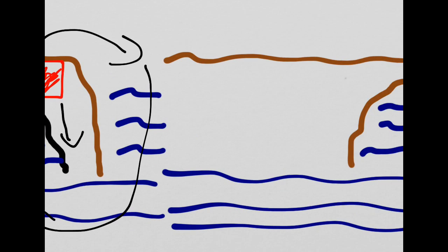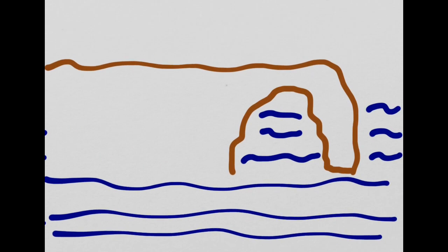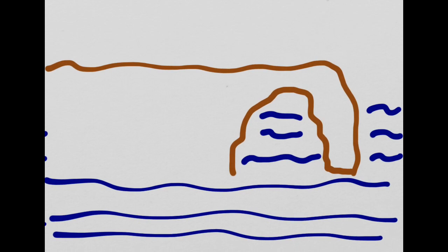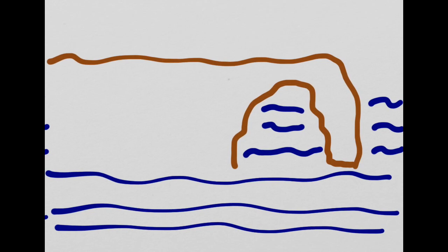That forms what we would call a stack. So in this example here on the diagram that we can see, the arch is developed a little bit further and obviously what would happen is this part of the arch would collapse. That leaves a stack and the headland.